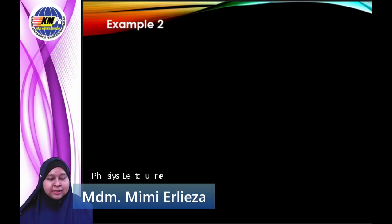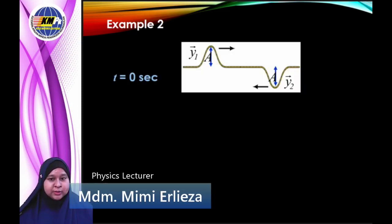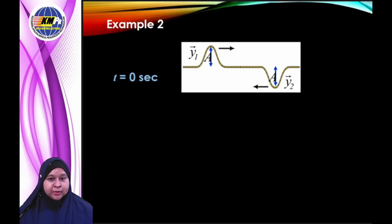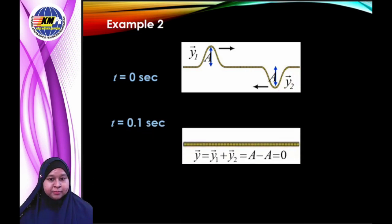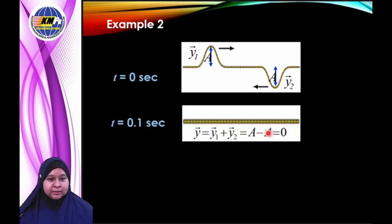Now let's see another example. At time 0 seconds, there are two waves. The first wave amplitude is 1 cm and the second wave amplitude is negative 1 cm. During superposition, the amplitude of the resultant wave equals the vector sum of the two waves, which is 1 cm plus negative 1 cm, giving 0 cm.